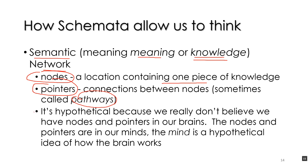What I'm really talking about is hypothetical, because we don't really believe that we have nodes and pointers in our brains. The nodes and pointers are in our minds. The mind is a hypothetical idea about how the brain works, but it's not an actual model — we would never expect to find pointers or nodes in our brain, though some researchers today are saying maybe these models are not that hypothetical.